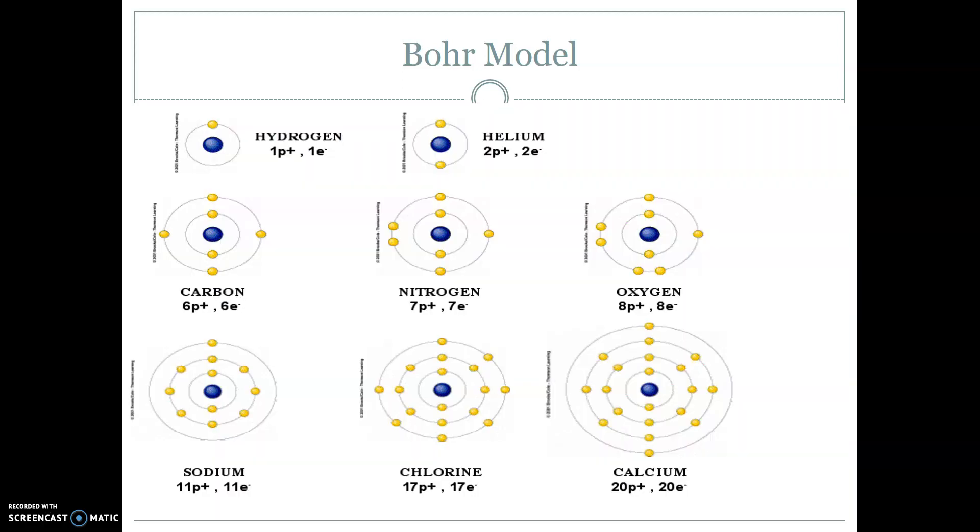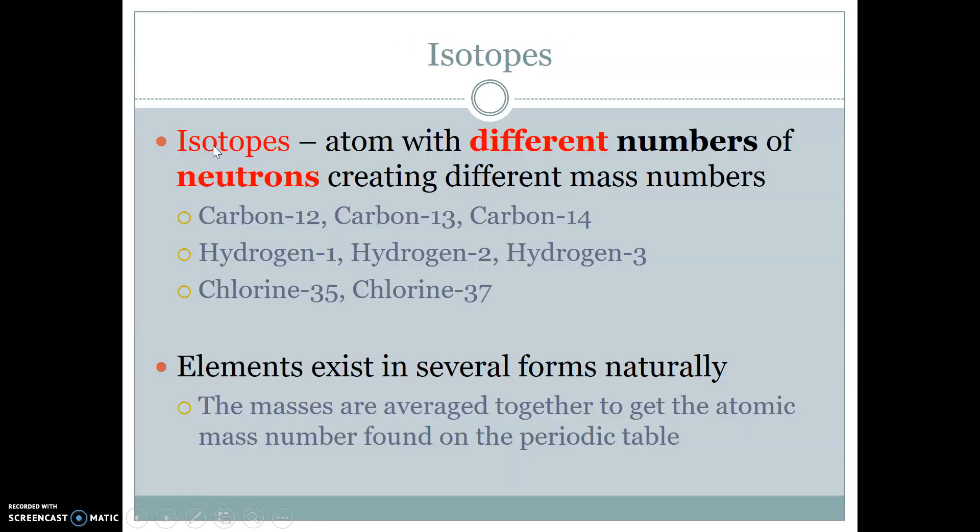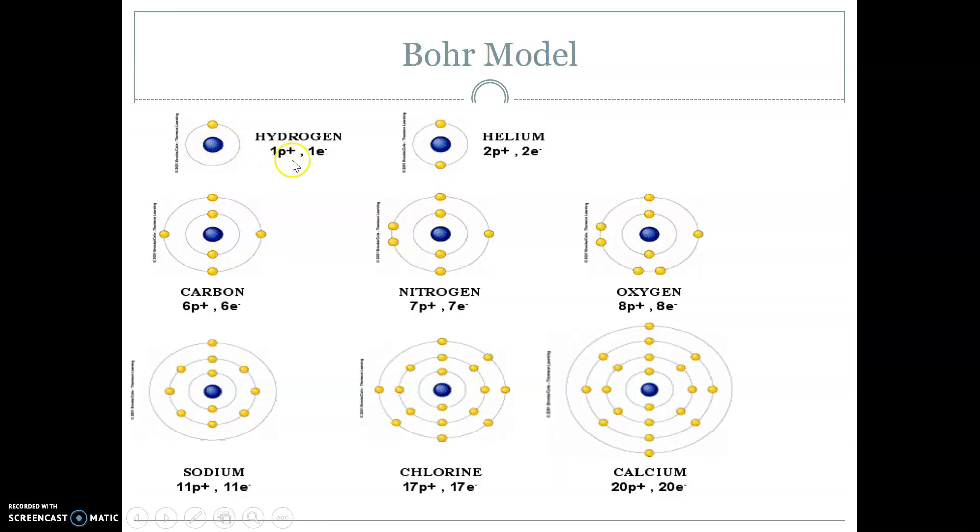So here are some examples of the Bohr model. So hydrogen, we have our nucleus. You can identify how many protons and how many neutrons it has. In this case, it's saying, okay, we have one proton, one electron. So we have one electron here, which goes in the first energy level.